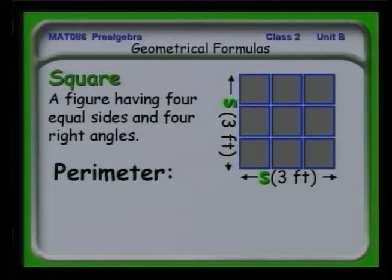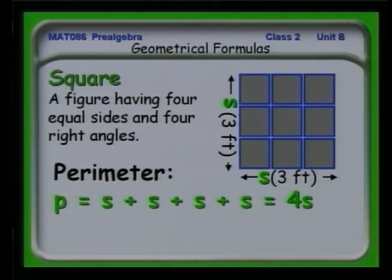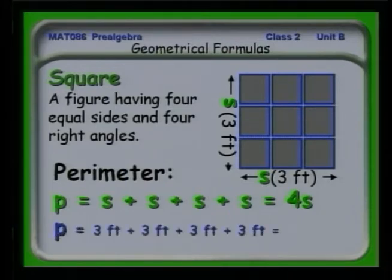Now if we talk about the perimeter, that's also pretty straightforward. Remember, it's the distance around the sides on the outside. So it's s plus s plus s plus s as you go around. It's four times whatever the length of the side is for a square. And of course, if we could calculate it in this particular case, we see that the distance around is 12 feet.